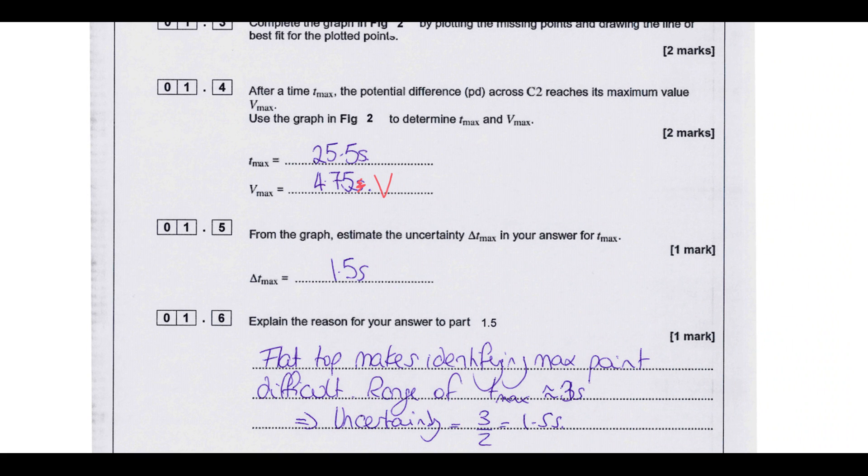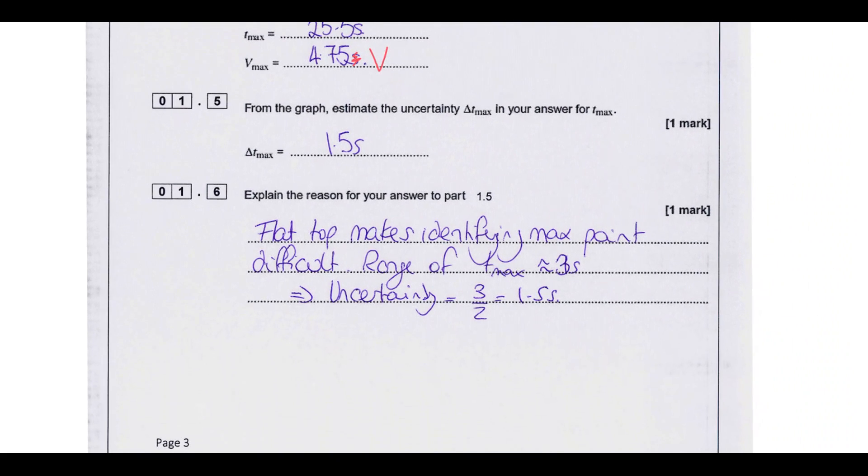And then for the final one, estimate the uncertainty in your reading of T max from your graph. So the key thing here was that the top of the graph was a long flat section, so there was actually some uncertainty in the value you read off. And so you've got a range of possible values that it could have been, and uncertainty is range over two.